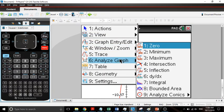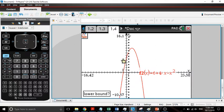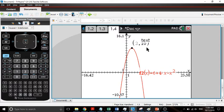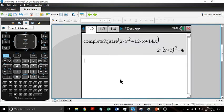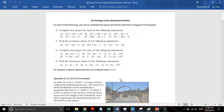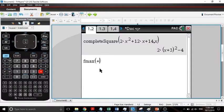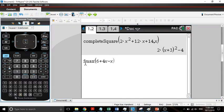So menu, zoom out, back. And we go to menu, analyze graph. We'll look for a maximum, set our boundaries, and we have a maximum of 10 and it happens at 2. So that's the way you can go through that.